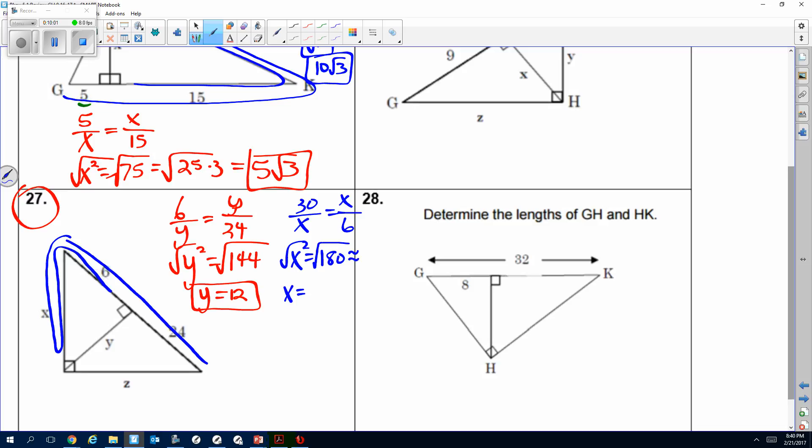And then we're going to take the square root, and x equals—we put in the calculator, the decimal is approximately 13.4. But I can simplify this. And I can use—did I do that right? Yeah. So I can simplify that and get 36 times 5, which is 6 root 5.